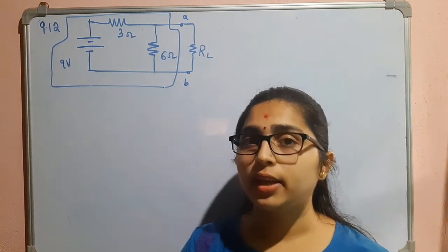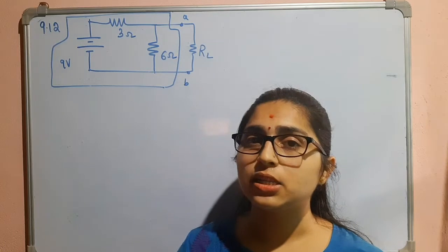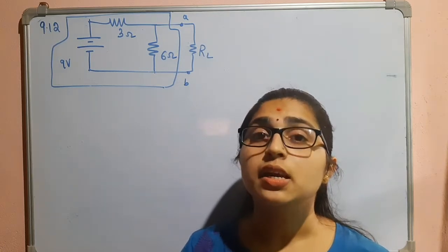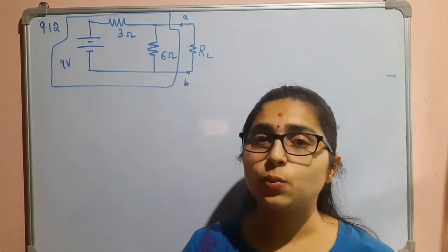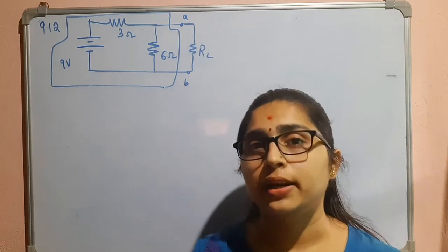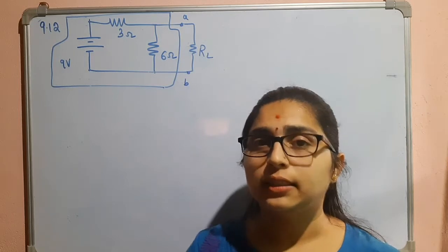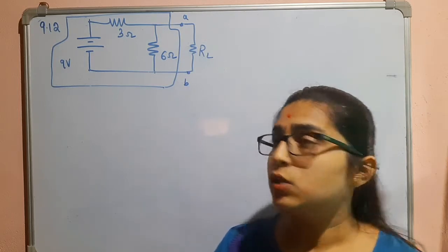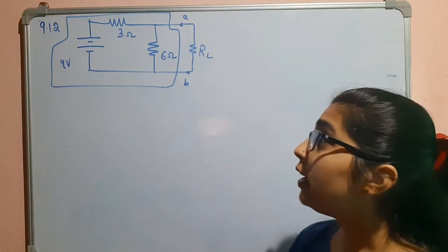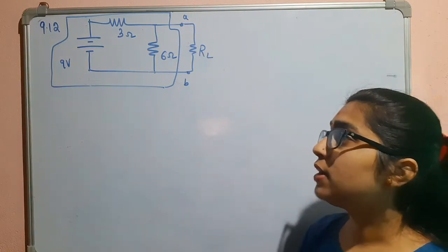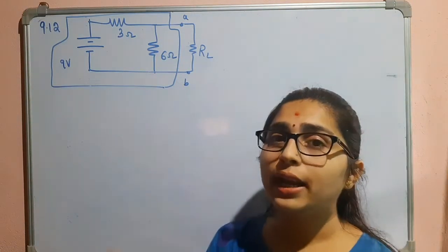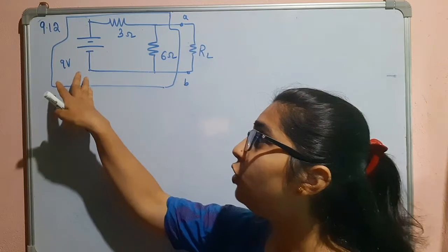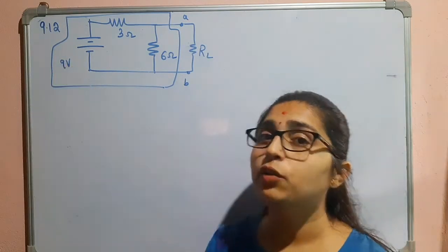To find the Norton's resistance you have three cases: the first case is when you have only independent sources, the second case is where you have both independent and dependent sources, and the third is where you have only dependent sources. This is the first case, where it involves only independent sources — a 9 volt independent voltage source.